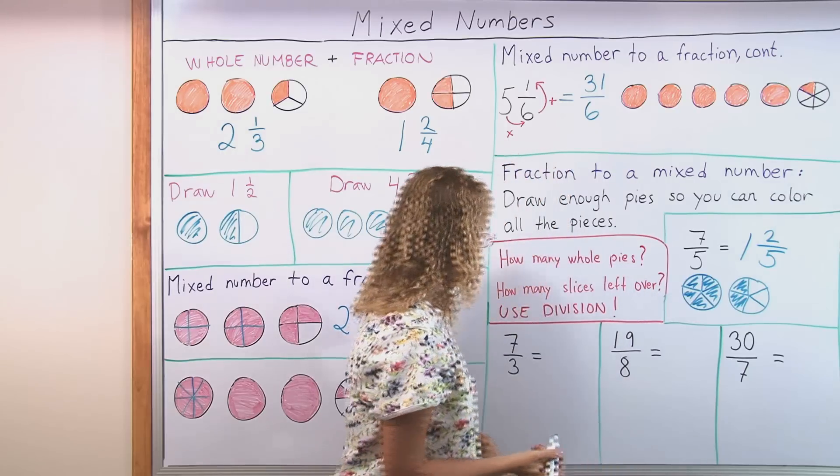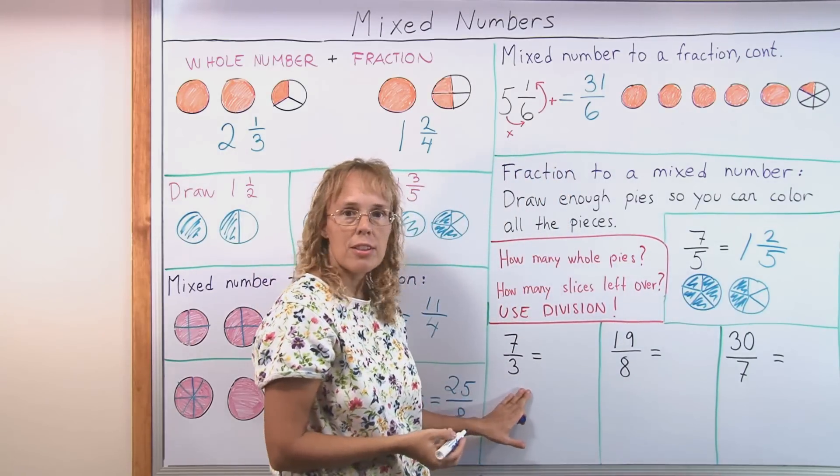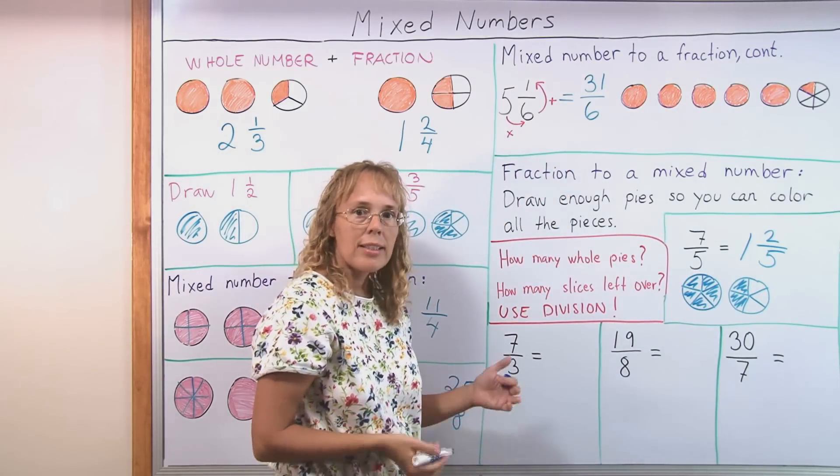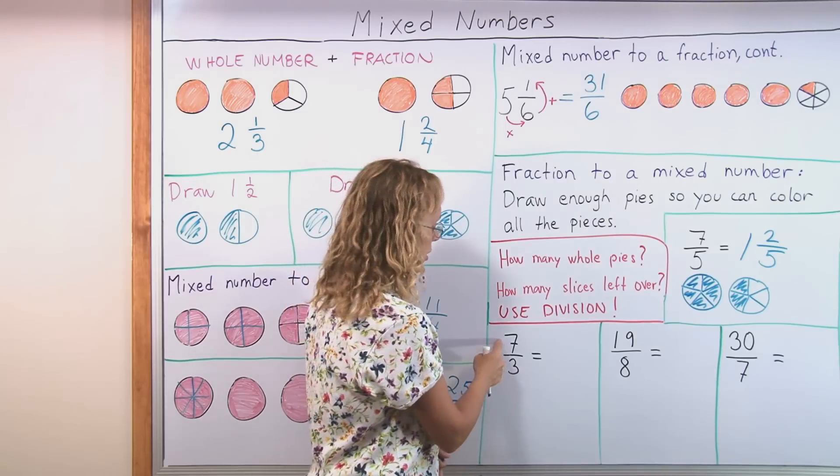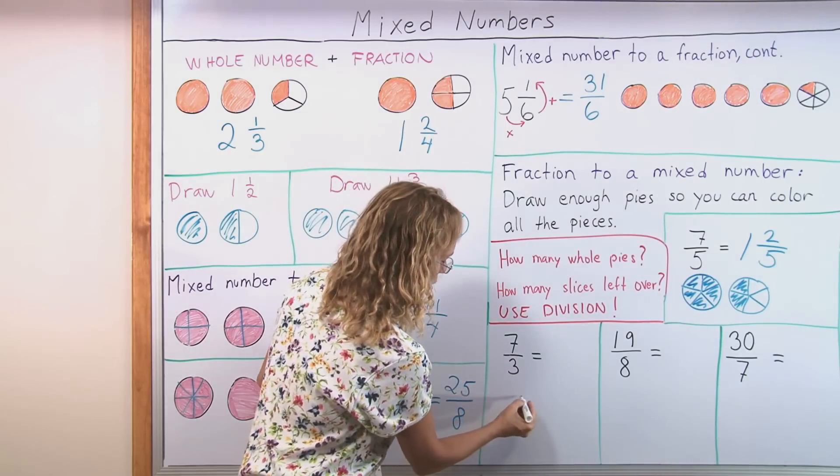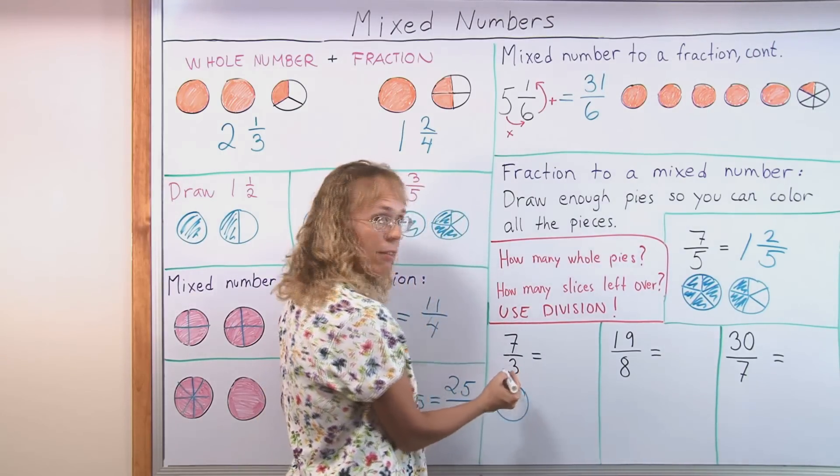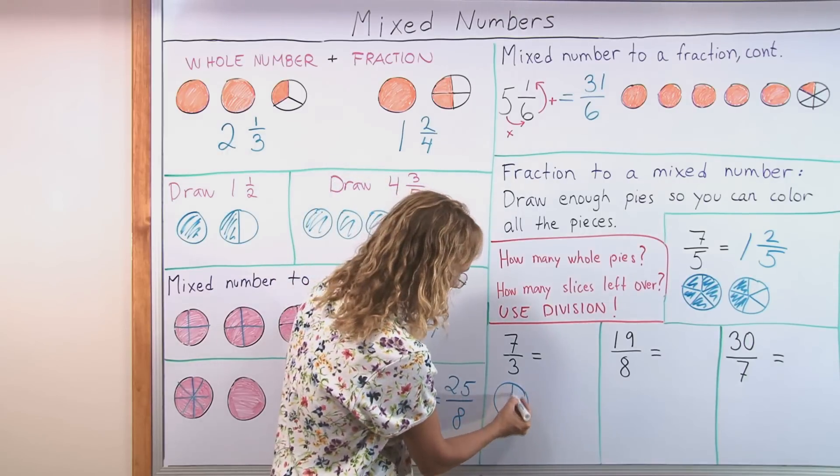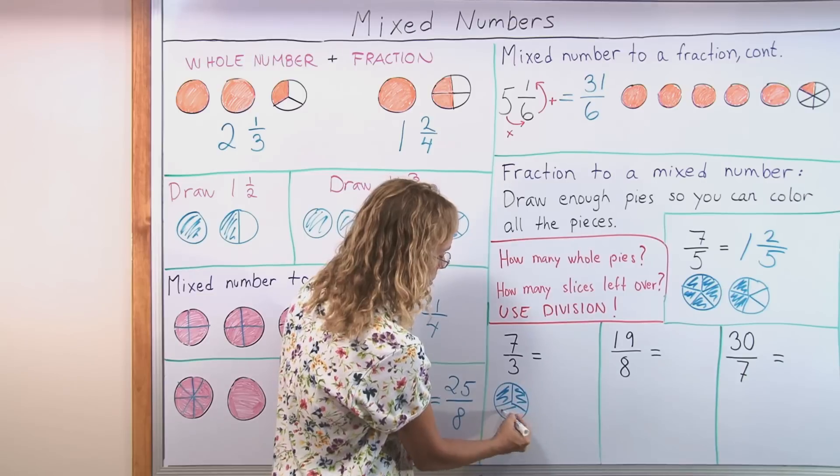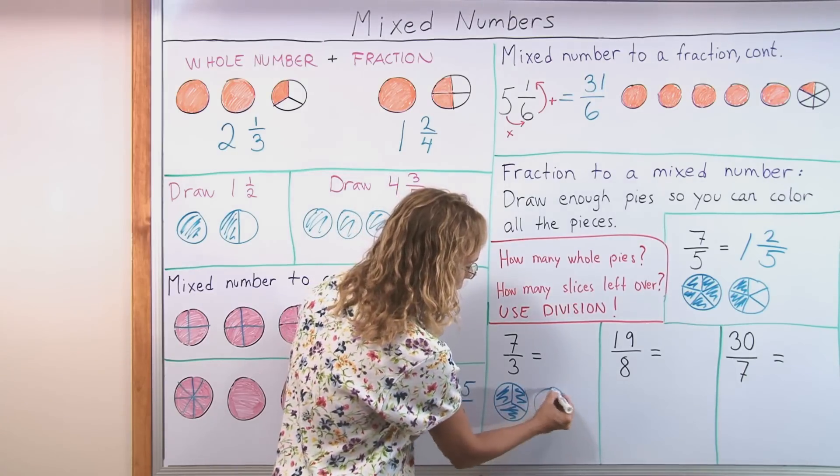So here's another one. Seven thirds. I need to draw pies. Enough pies so that I can color seven thirds. So I draw a pie. It needs to be divided into thirds. And so I can color three thirds. But that's not enough.